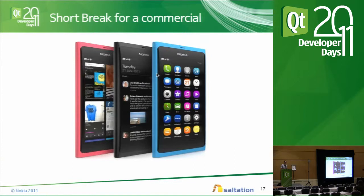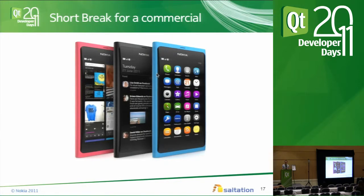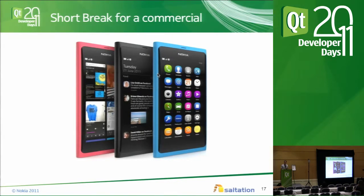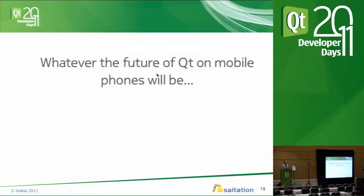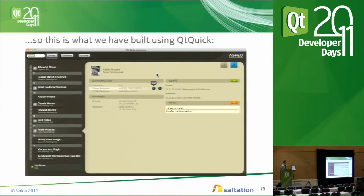But something happened a few years ago: Trolltech was bought by Nokia. Nokia builds mobile phones. Nokia saw that widget-based interfaces are not really right for mobile phones, and so they developed something else. Whatever the future of Qt or mobile phones will be — there's definitely a future for Qt on mobile. But whatever happens, Qt Quick is there, and we can use it — and we can also use it on the desktop. So I sat down and started using Qt Quick, and the designer gave me all the elements from his Photoshop file.